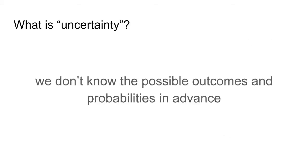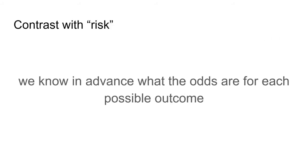What is uncertainty? We don't know the possible outcomes, and we certainly don't know the probabilities of those outcomes. If you don't even know the outcomes in the first place, there's no way you're going to be able to assign probabilities in advance. Contrast with the concept of risk, where we know in advance what the odds are for each possible outcome — the set of possible outcomes is known, and the probability distribution is known. So these are two profoundly different concepts, even though unfortunately they're often used interchangeably.